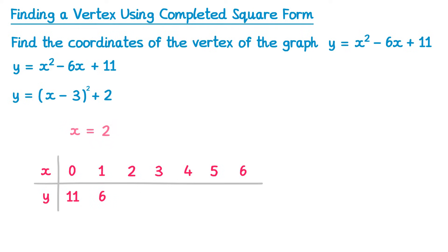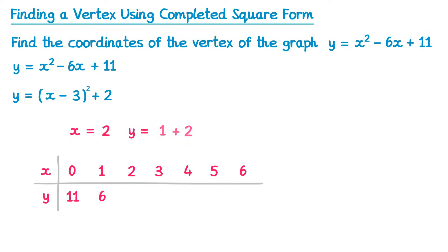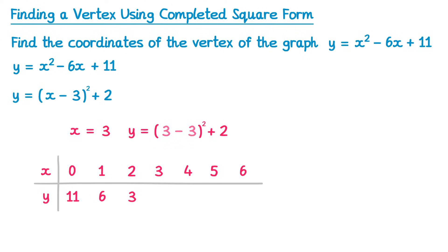For x equals 2: 2 take away 3 is negative 1, squared is 1, add 2 is 3. So if x is 2, y is 3. Now x equals 3 — this one's particularly important. 3 take away 3 is 0, 0 squared is 0, and 0 add 2 is 2. So if x is 3, y is 2.